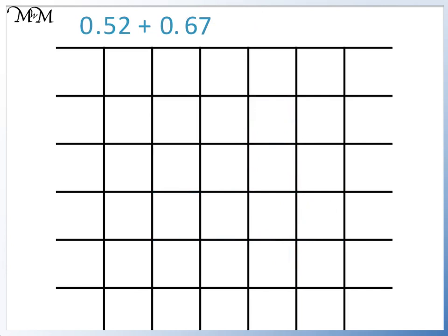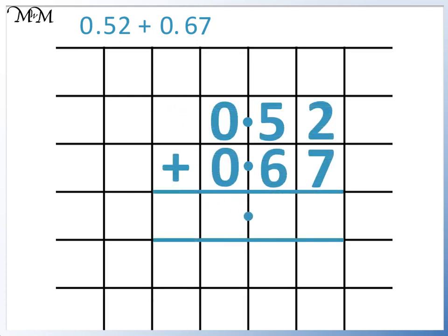Here we have 0.52 plus 0.67. First we line up the digits in their place value columns. We begin by adding the digits in the hundredths column. 2 plus 7 equals 9. Next we add the digits in the tenths column. 5 plus 6 equals 11. We write 1 in the tenths column and carry 1 over to the units column. Finally we add the digits in the units column. 0 plus 1 equals 1. So the answer is 1.19.